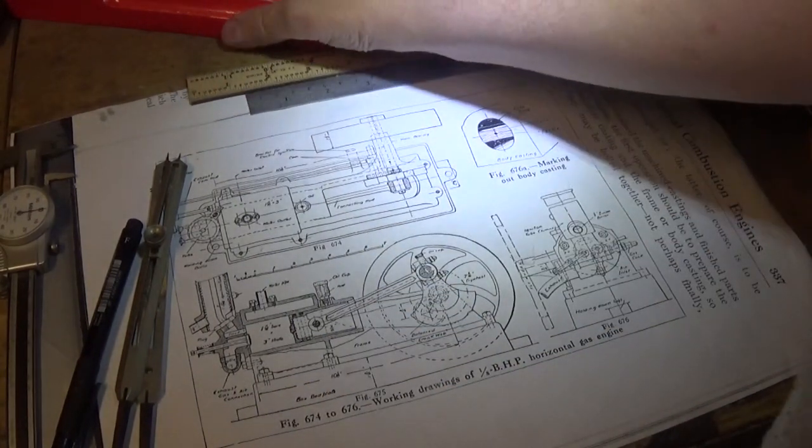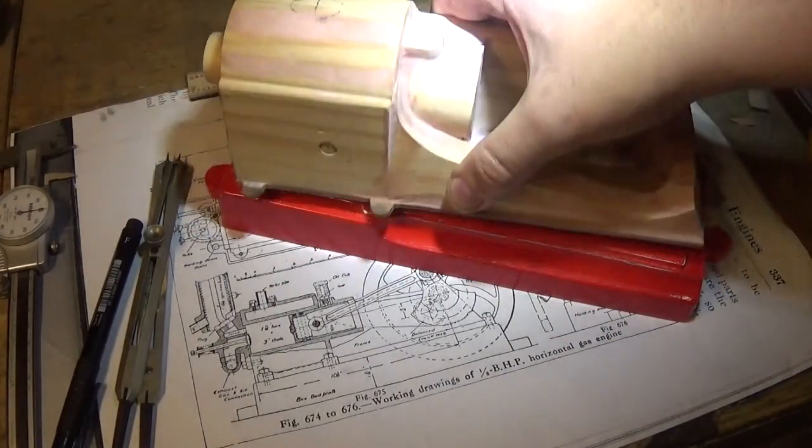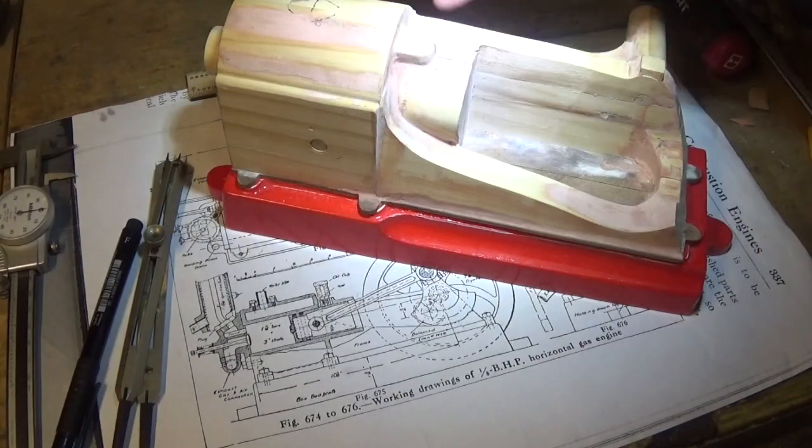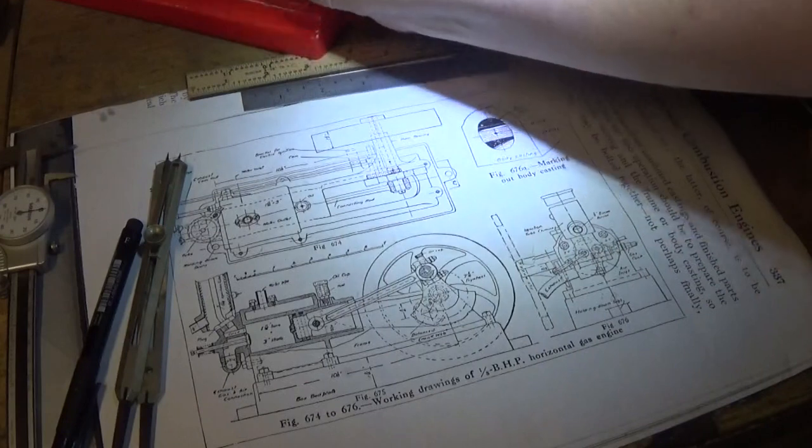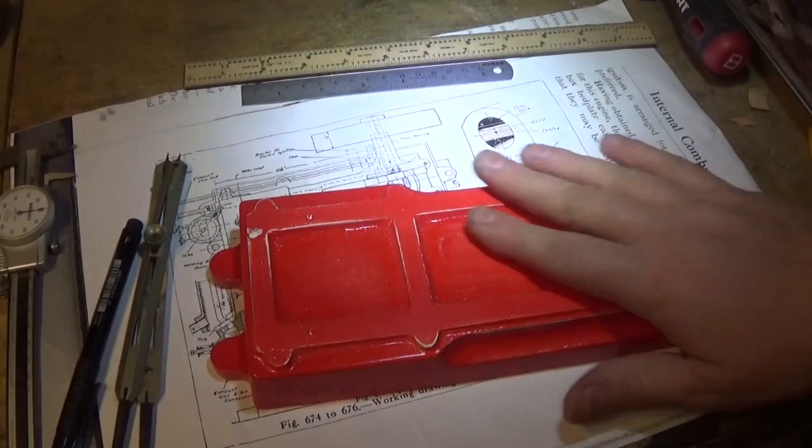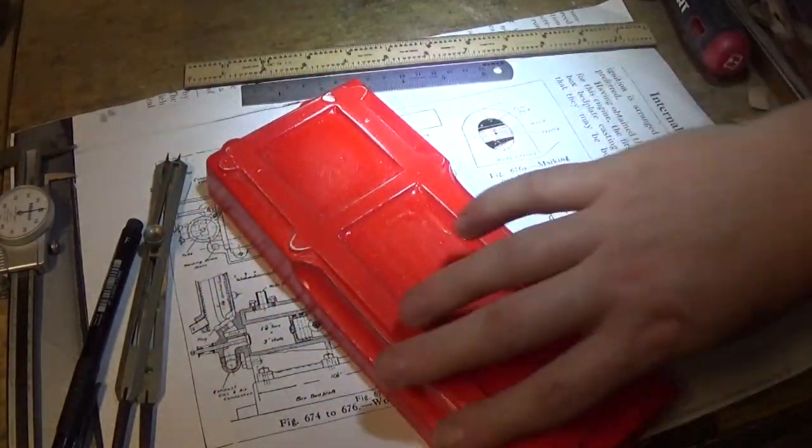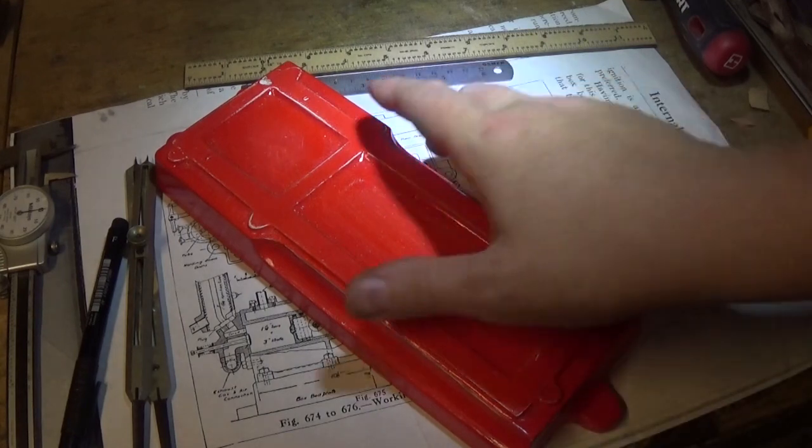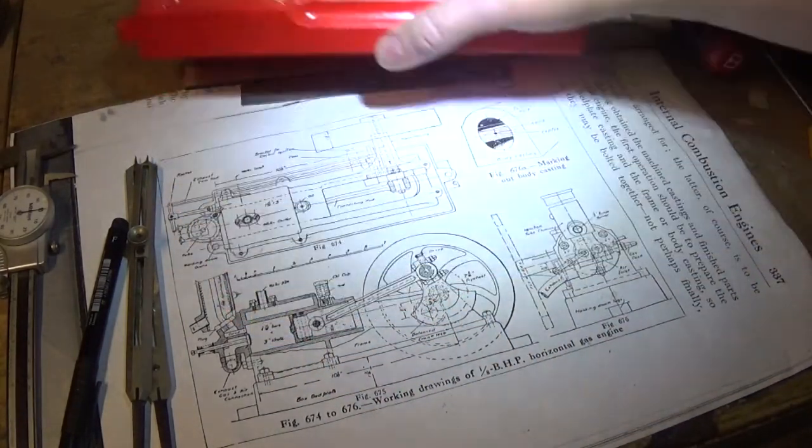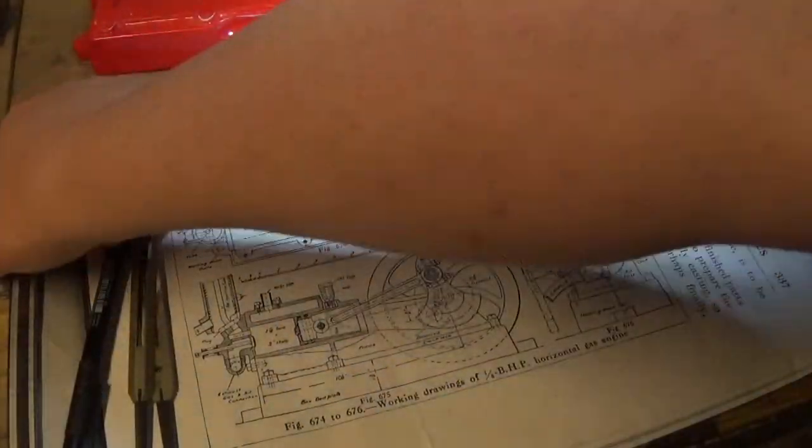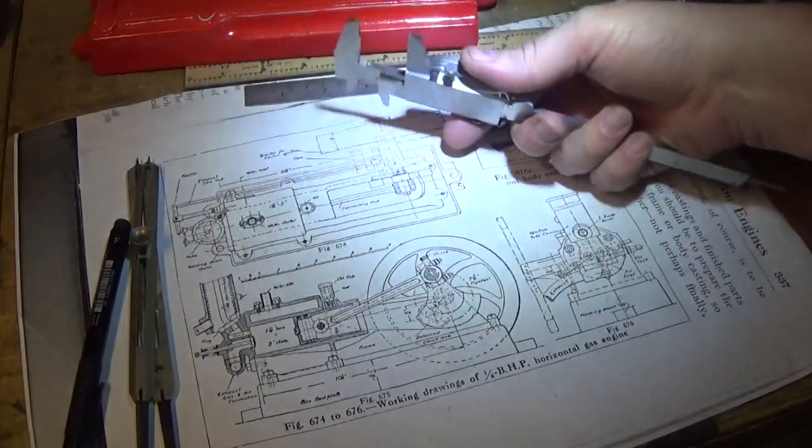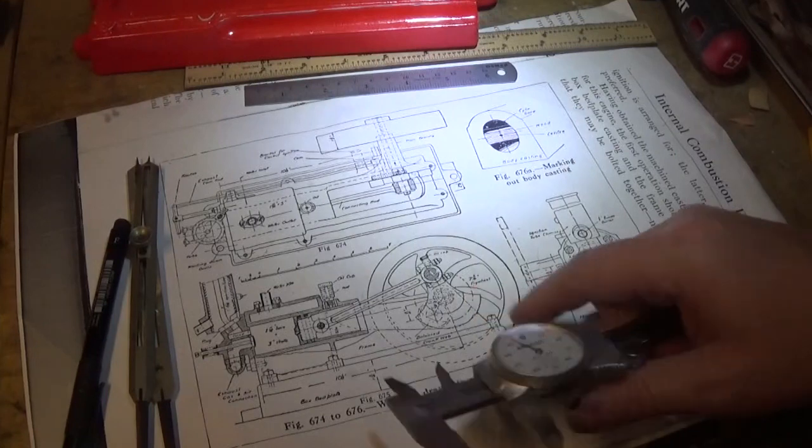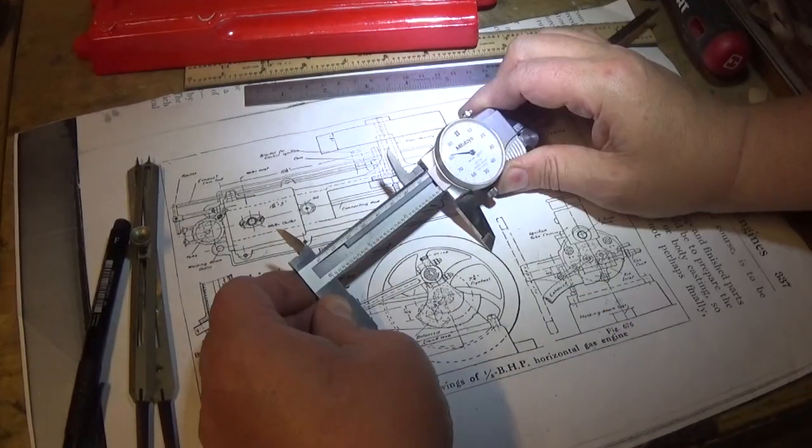So how do we work out what the scale is exactly so that we can check all these measurements and make a pattern? We've got the base and what looks like a cylinder pattern coming together. We need to know how wide something is, or the diameter, or the distance between these two points.